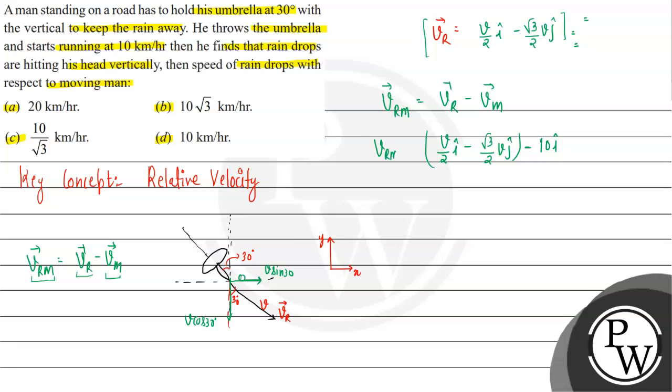So this will be the velocity of the rain with respect to the man.